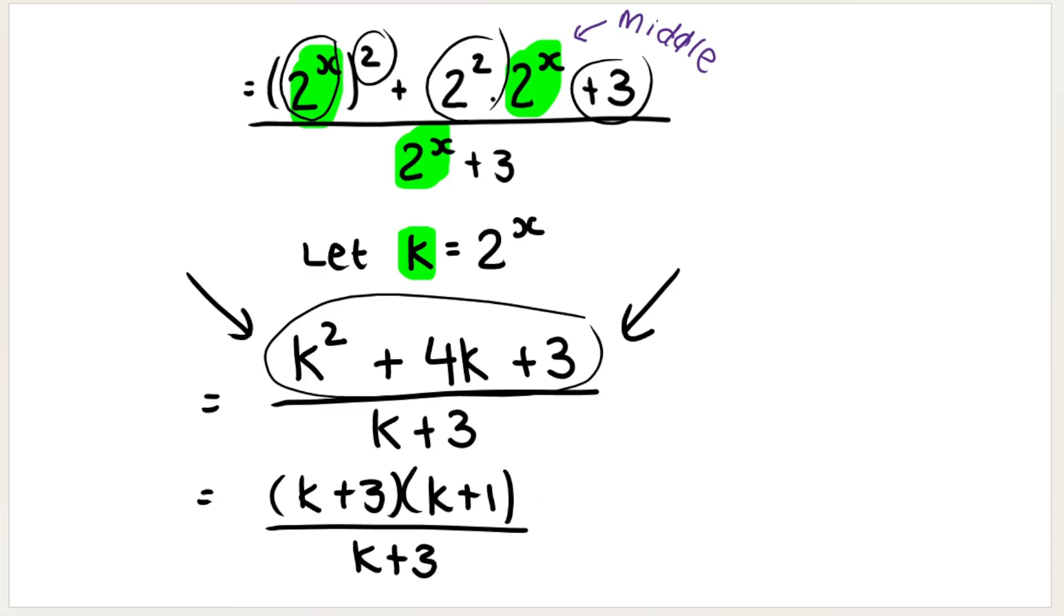Now that I have one term at the top, one term in my numerator, I am allowed to cancel if I want or if I can. So K plus 3 cancels with K plus 3. Therefore, my answer is K plus 1. But that's not my final answer. I don't want K in my final answer. We need to replace that. Remember, earlier on, we said K must be equal to 2 to the power of X. So we're just going to put 2 to the power of X back in the place of K. And that is my final answer.